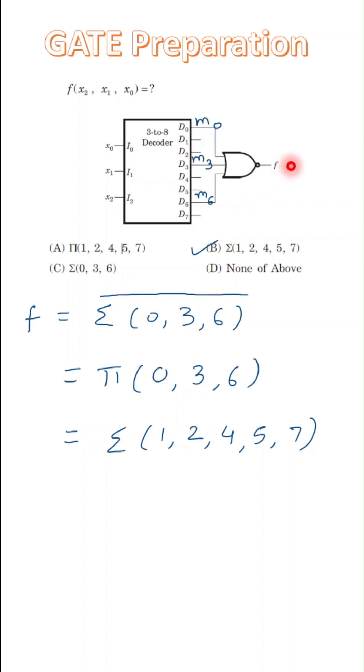The final output of this decoder is F, which is the NOR operation on the outputs M0, M3, and M6. The outputs of the decoder M0, M3, and M6 are applied to the NOR gate.